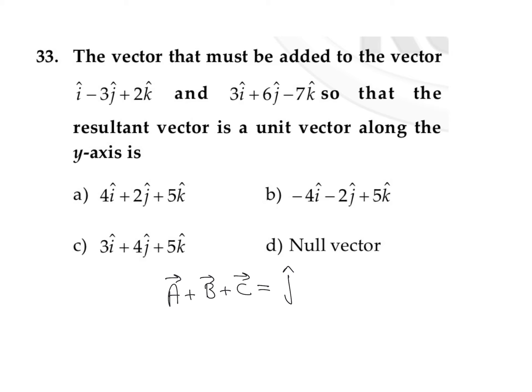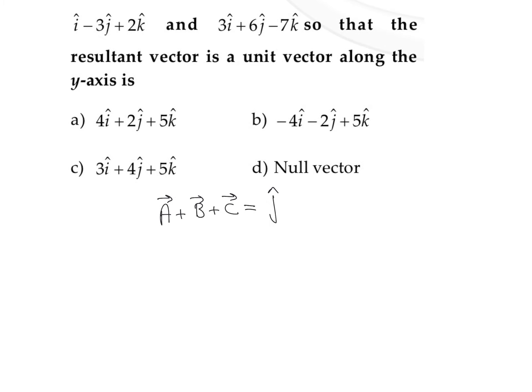What is unit vector along y-axis? Unit vector along y-axis is nothing but j cap. So our aim is to find out the C vector, so this can be written as j cap minus A vector minus B vector.